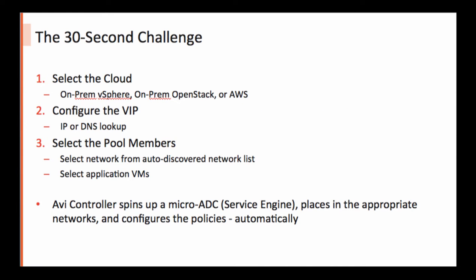Here are the steps we will follow. First, we'll select the cloud in which we want to provision the load balancer. With AVI, you can manage ADC instances using the centralized AVI controller across on-prem data centers, private cloud, and public cloud. Then we'll configure the VIP, IP, or DNS name. And finally, we will pick up the appropriate network and VMs within that network for the pool.